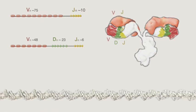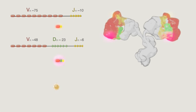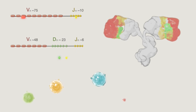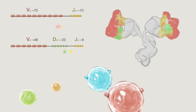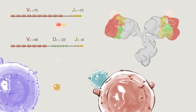In each B cell, gene rearrangement may cut and join together a unique combination of these gene segments, resulting in different B cells possessing different functional antibody genes, and a repertoire of B cells with diverse antibody structures.